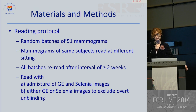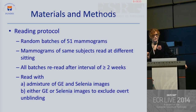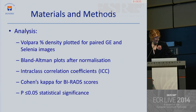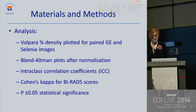All the batches were re-read after an interval of no less than two weeks, and additionally, we either read them with an admixture of GE and Selenia images or fully GE or fully Selenia, to see if there was any overt unblinding bias. When the Volpara percent density was plotted for the paired measurements for each woman, the data was not normally distributed, so it was normalized with a log transform. We then used Bland-Altman plots, intra-class correlation coefficient, and Cohen's kappa for the BIRAD scores.